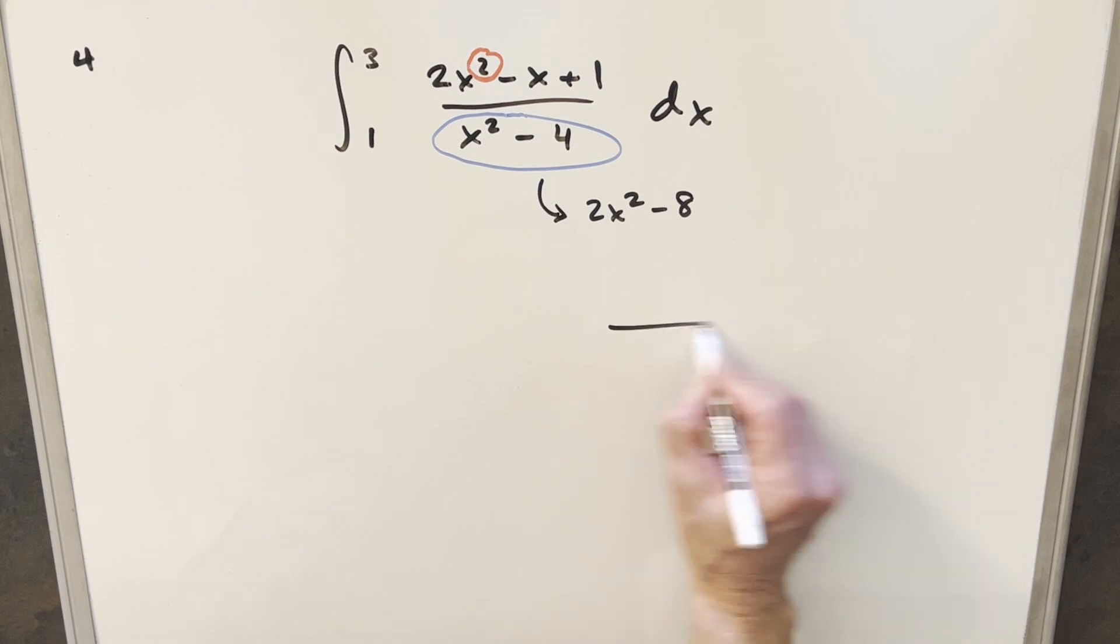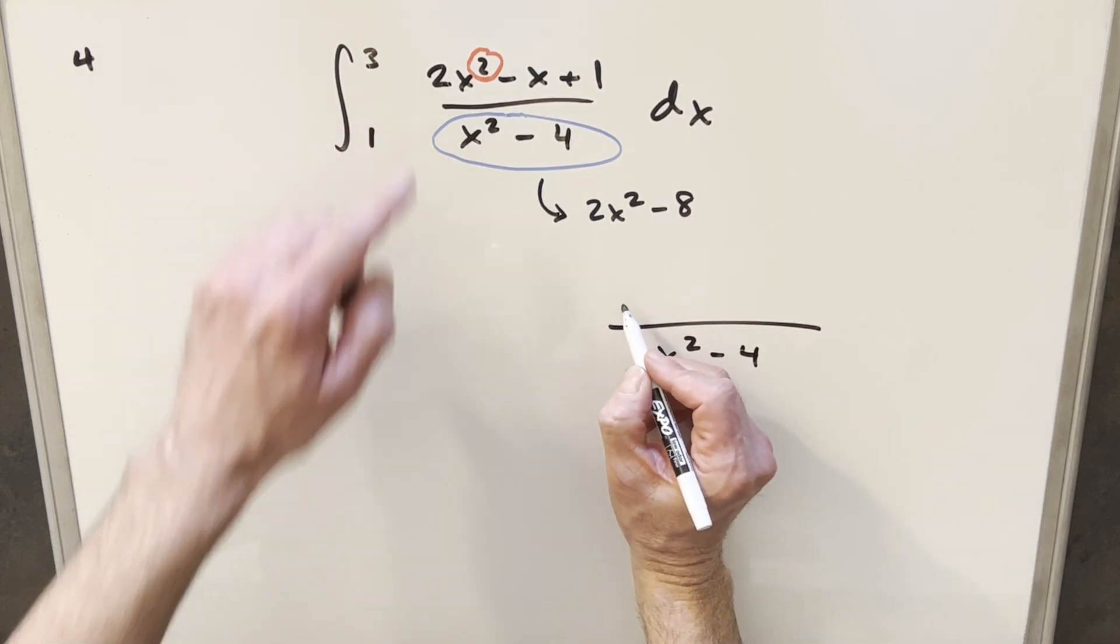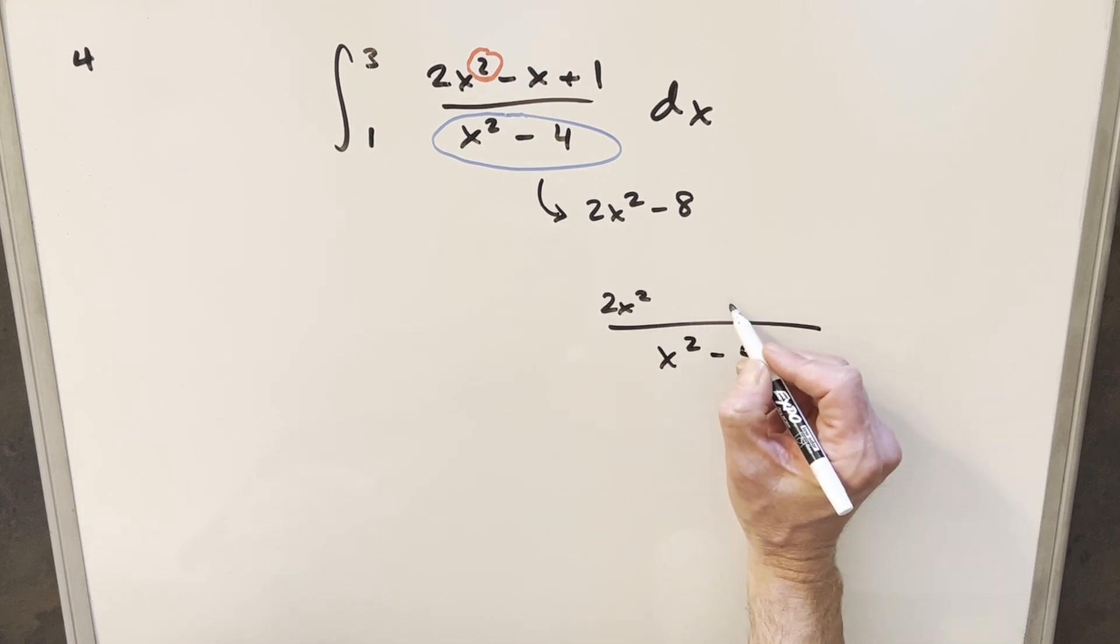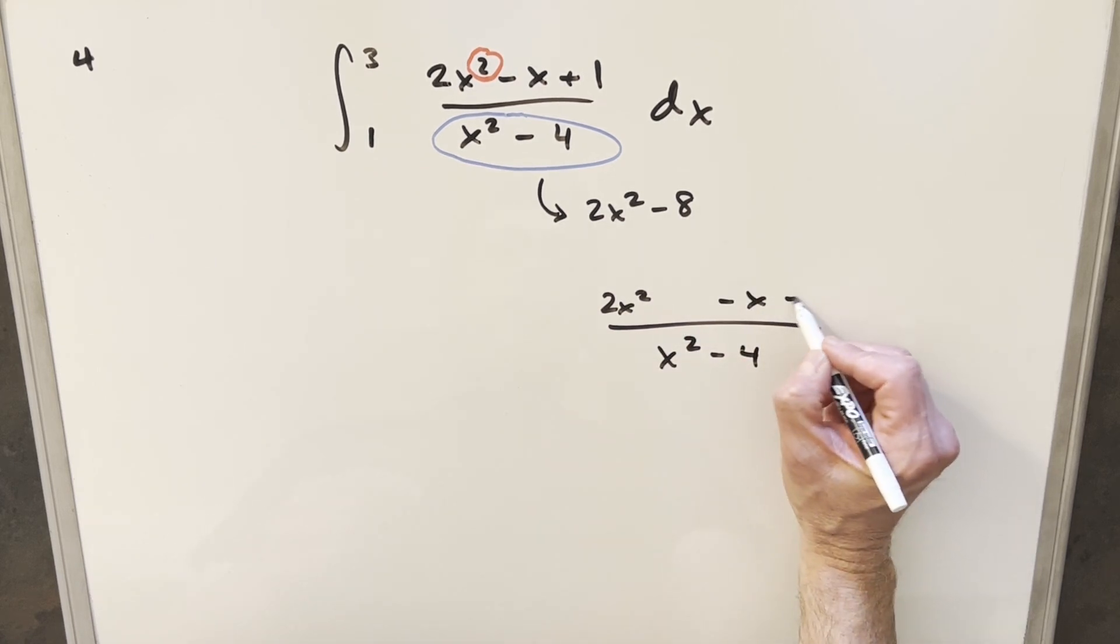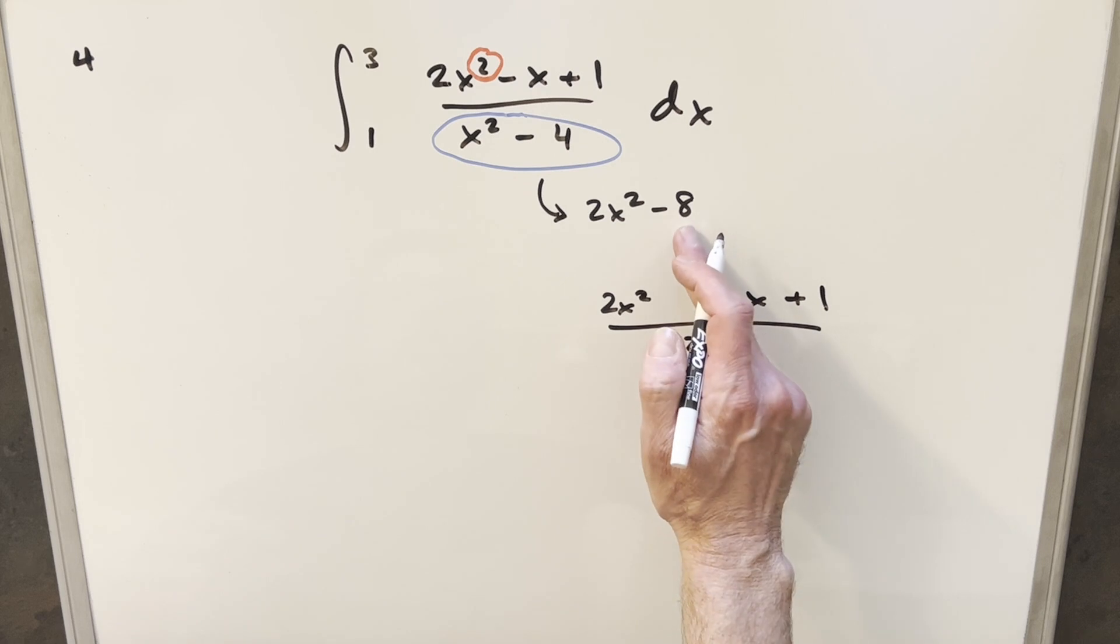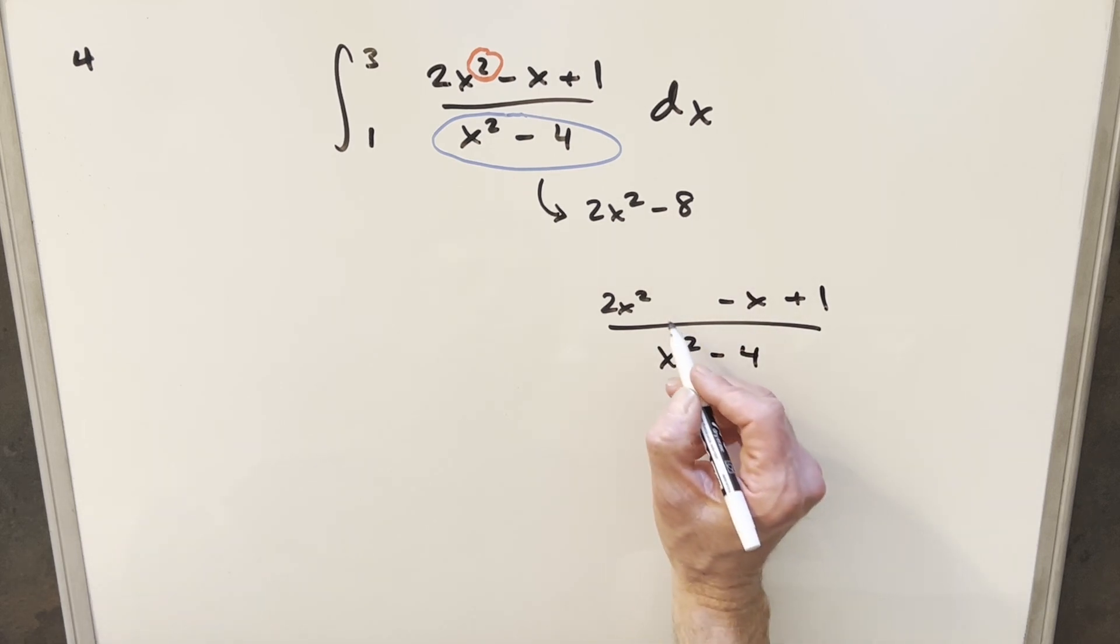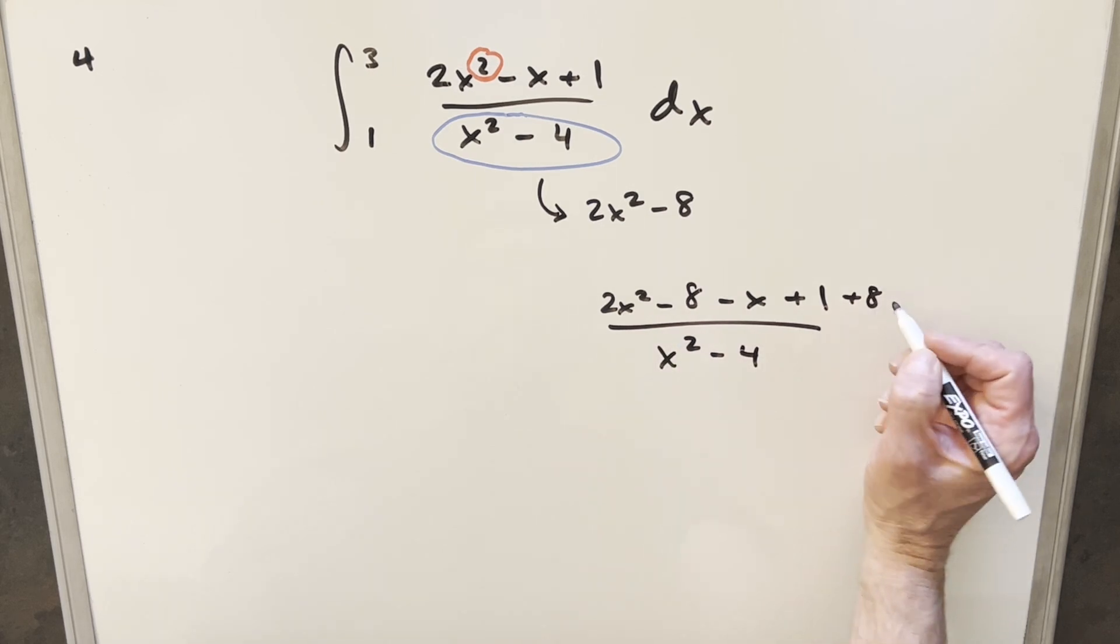So I think we'll just go over here and rewrite it. So we'll have our x squared minus four here. Then running down everything here, we're going to have two x squared minus x plus one. But then I want to create this so I can have part of it just be two. So I'm just going to subtract eight here. I don't want to change it, so we'll add an eight over here.